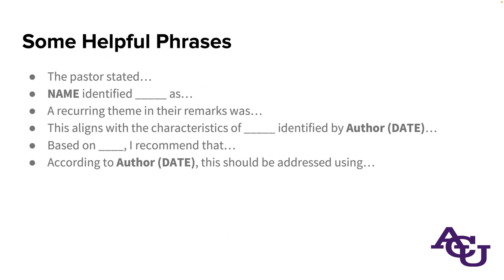Some phrases that might be helpful as you write up your interview analysis: things like 'the pastor stated' to identify the source, or 'so-and-so identified this thing as an issue.' If you're summarizing, you can use phrases like 'a recurring theme in the remarks was...' You can relate it back to literature with phrasing like 'this aligns with the characteristics identified by [author, date],' or 'based on this theory or model, I recommend that...' And you contextualize recommendations with literature: 'according to [author, date], this should be addressed using...' or 'this is counterproductive because...'